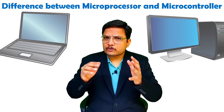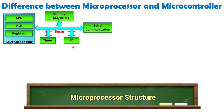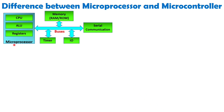Let us see all those differences step by step so that it will give you more clarity. When we talk about microprocessor, in a single chip we have CPU, ALU, and registers. With the use of registers, we can program the microprocessor and the program will be stored in memory — but that will be external memory. We interface external memory with the microprocessor, so with a single chip we don't have memory; we interface it externally.